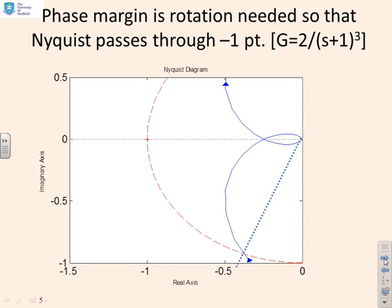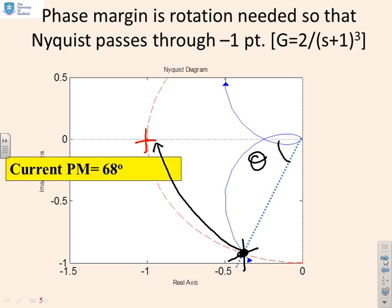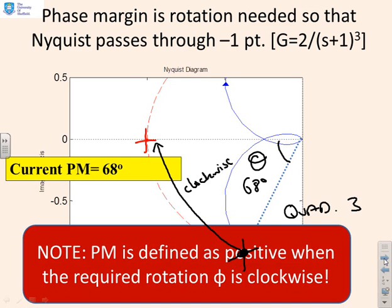Here's another example. Again, it's a different Nyquist diagram but a similar sort of picture. The unit circle is marked here, so this is where the Nyquist diagram crosses the unit circle. If I rotate this one through angle theta, I will end up at the minus 1 point. In this particular case, this angle theta is 68 degrees. We're again in quadrant 3, the rotation required is clockwise, and so this is treated as a positive phase margin. The phase margin is defined as positive when the required rotation is clockwise.